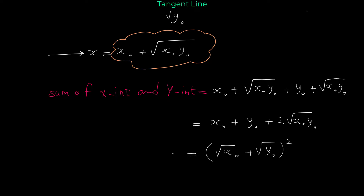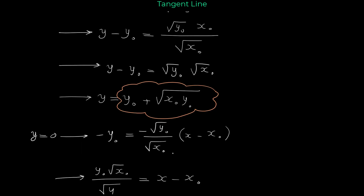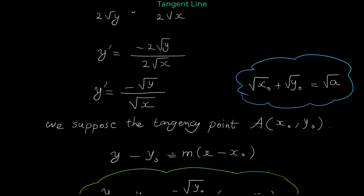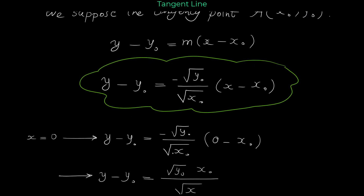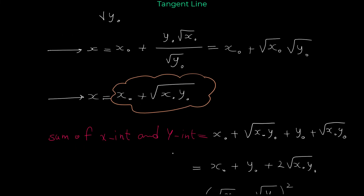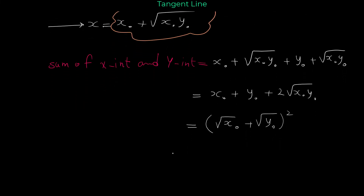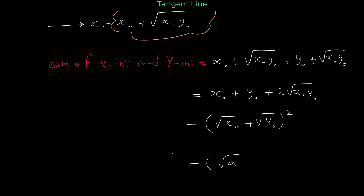But remember, x₀ and y₀ satisfy the equation of the curve: square root of x₀ plus square root of y₀ equals square root of a. So the bracket equals square root of a, and raising it to the power of 2 gives a. Therefore the sum of the x-intercept and y-intercept is always equal to a, which is what we wanted to prove.